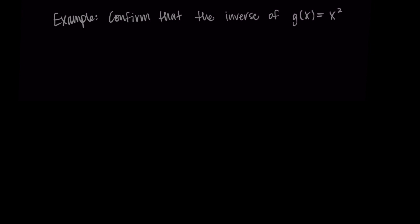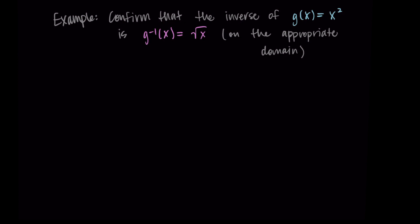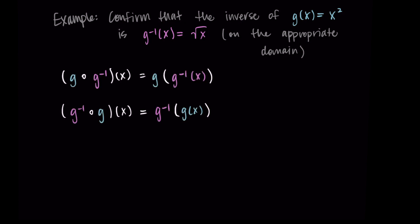Let's repeat this with one more example. Let's confirm that the inverse of g of x equals x squared is g inverse of x equals the square root of x — and assume we're doing everything on the appropriate domain. You'll see in the next video in this series that we need to do a little bit of work with the domains, but let's not worry about it too much here. We just want to use this composition property to show that the square root of x is the inverse of x squared. So we'll find both compositions: g composed with g inverse of x, and g inverse composed with g of x.